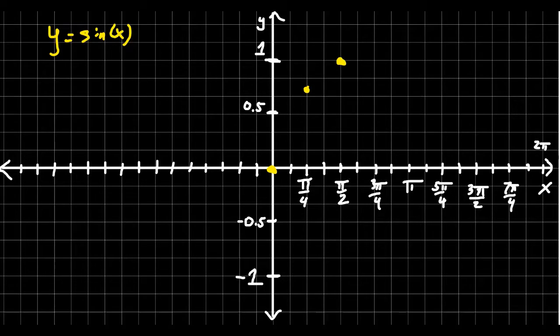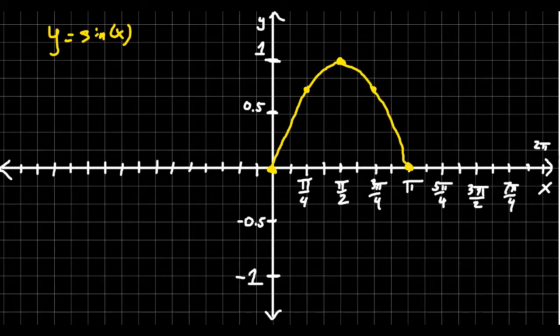At 3π/4, it's again √2/2. And at π, it's returned to 0. So if we assume sine is a nice, smooth, continuous function, we can connect the dots and get a picture that looks like this, this little bump on the screen here.